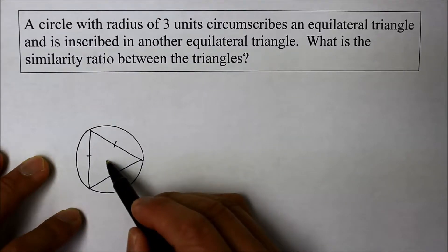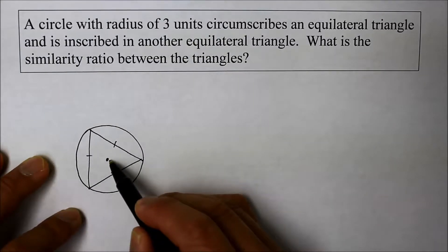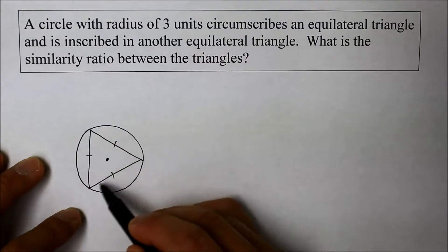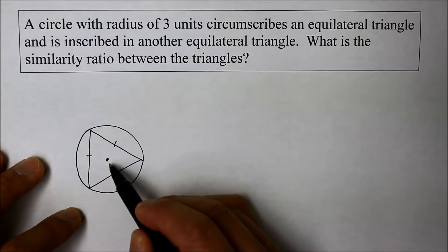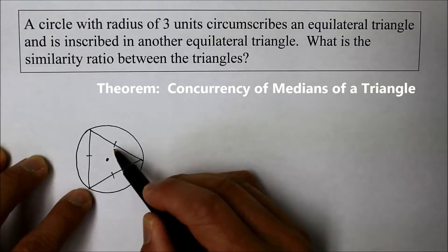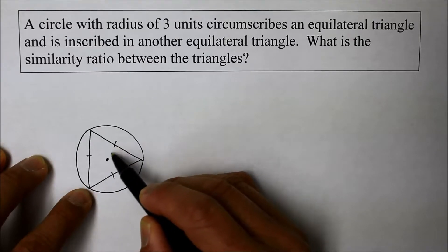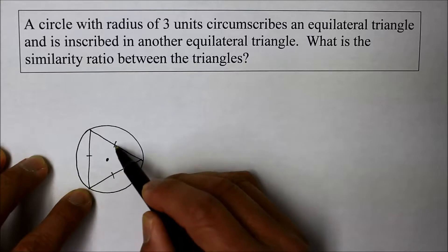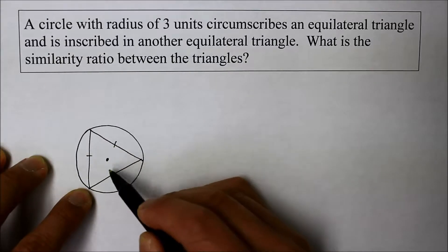So here is the center of that circle which happens to be, if this is an equilateral, it is a concurrency of medians of a triangle. Meaning, if I were to draw a line from the vertex to its opposite side, the midpoint, the whole distance is called the median. And where the three medians intersect is the point of concurrency.